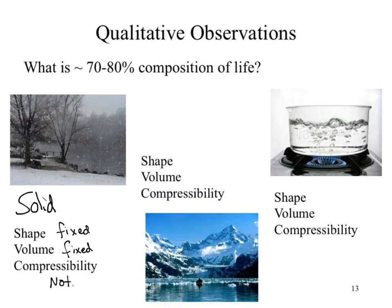What happens when we move to the liquid state? The shape can change — think about water: put it in a bottle or pour it out and it spreads over the area. So the shape is variable. The volume, however, stays constant in a reasonable situation — a fixed volume. If the volume is fixed, compressibility is also not really possible.